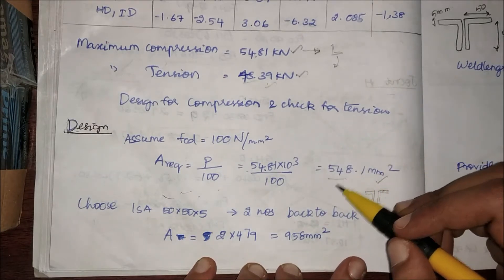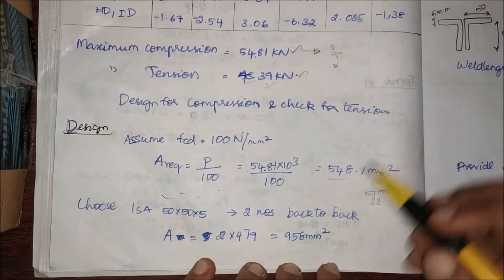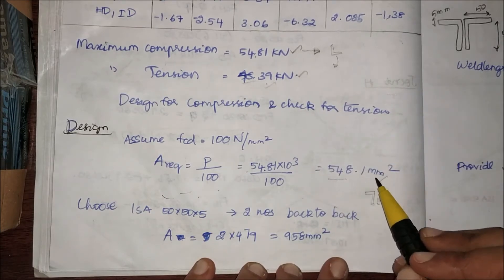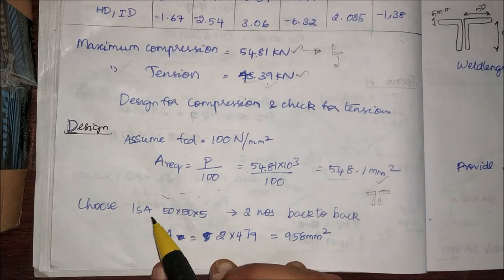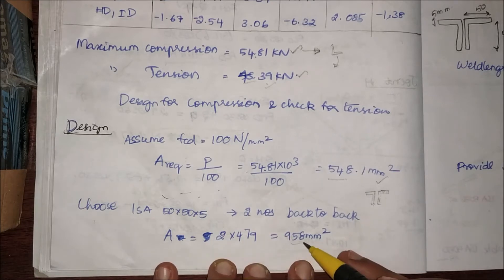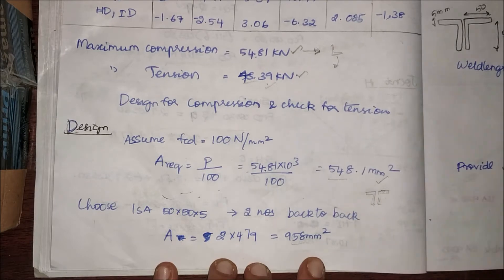The area is 548.1 mm². I'm going to choose two ISA 50x50x5. The total area comes to 958 mm², which is greater than 548, therefore it is safe.